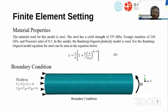Finite element setting material properties: The material used in this model is steel. The steel has a yield strength of 355 MPa, Young's modulus of 210 GPa, and Poisson's ratio of 0.3. In this model, Ramberg-Osgood plasticity model is used. For the Ramberg-Osgood model equation for steel, it can be seen in equation 4.